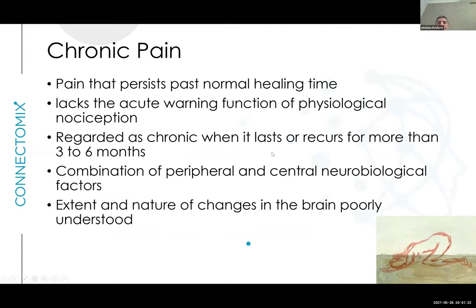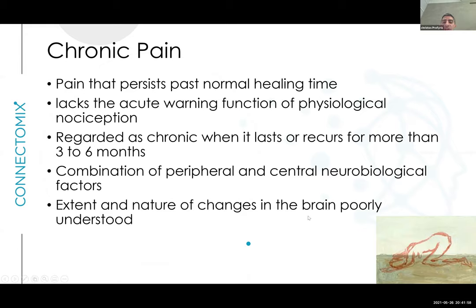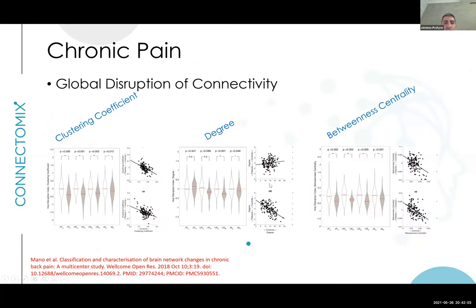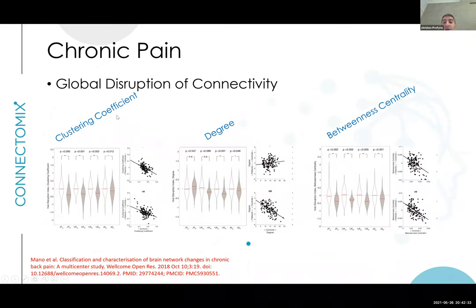The last condition is chronic pain — pain that persists past normal healing time, lacking the acute warning function of physiological nociception, and regarded as chronic if it lasts beyond three to six months. It involves both peripheral and central neurobiological factors, and until recently the extent of brain changes was poorly understood. The Manu et al. 2018 study examined patients with chronic back pain from the UK, US, and Japan using resting state functional MRI to understand changes in functional connectivity.